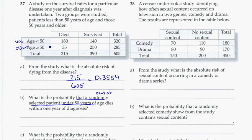So on the bottom, we're going to put the out of, which is 320 total people who are under age 50. And those that died, that was 180. We can see up here, 180. So 180 divided by 320 should get you 0.5625.